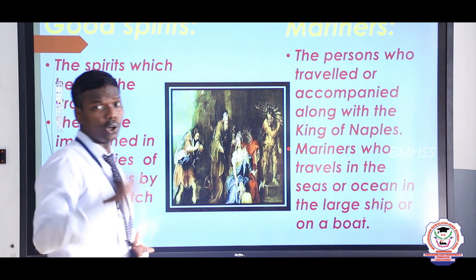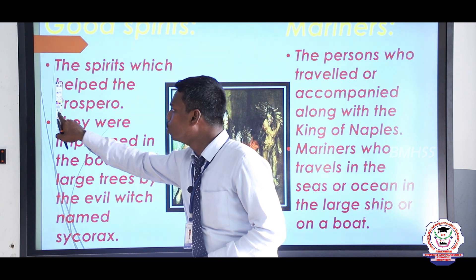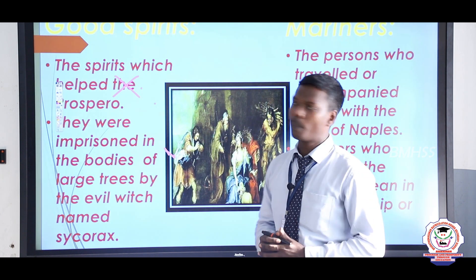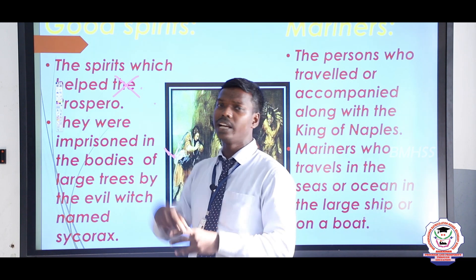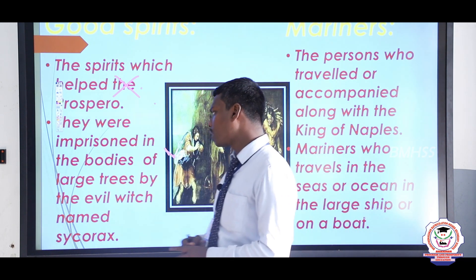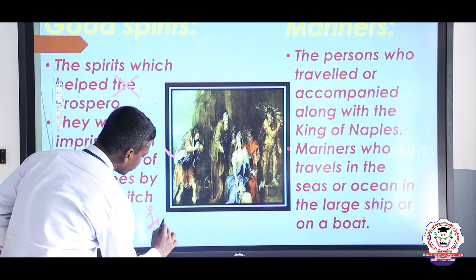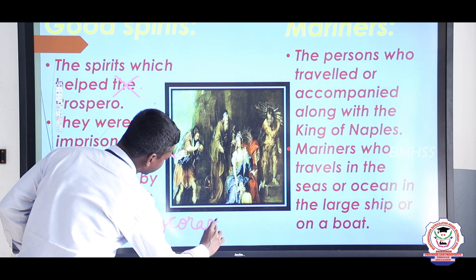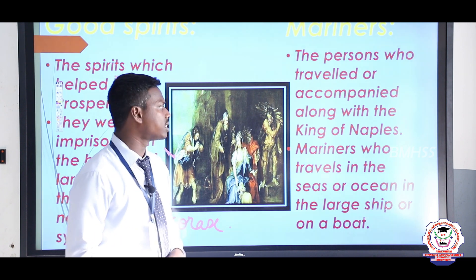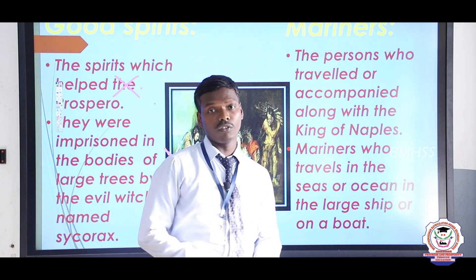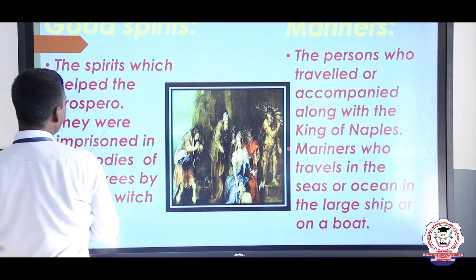Good spirits are the spirits which were imprisoned in the trees and later helped Prospero. Prospero was the person who released all the good spirits that had been imprisoned in the bodies of the large trees by the evil witch Sycorax — spelling: S-Y-C-O-R-A-X. Mariners are the persons who traveled and accompanied the King of Naples in the ship. A mariner is a person who travels in the seas or oceans in a large ship or boat.